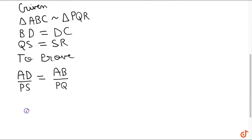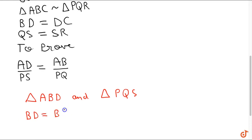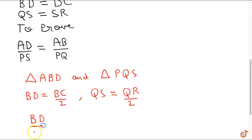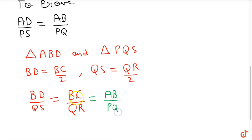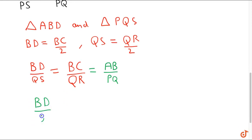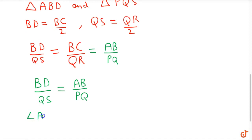So let's start the proof. We will consider triangle ABD and triangle PQS. In triangle ABD and triangle PQS, BD is equal to BC by 2 and QS is equal to QR by 2. So if we divide these two, we get that BD by QS is equal to BC by QR, which is also equal to AB by PQ, because triangle ABC and triangle PQR are similar, so BC by QR equals AB by PQ. This implies that BD by QS is equal to AB by PQ.